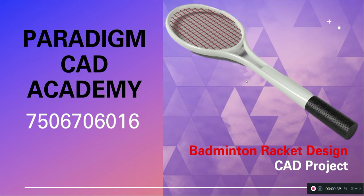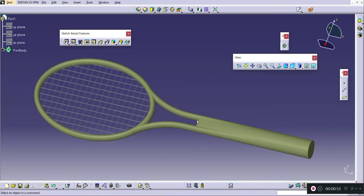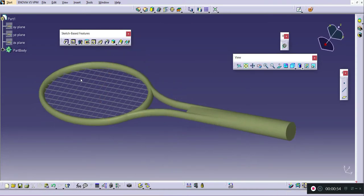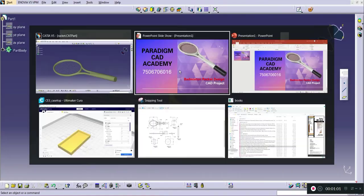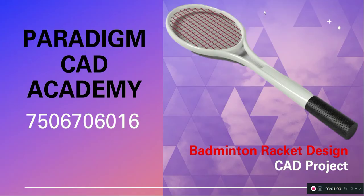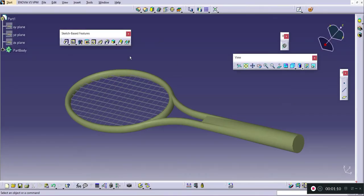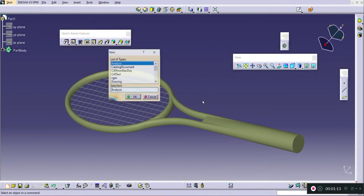Let's start designing the first head part of the badminton racket. After completing in CAD, the part will look like this, and after application of material, the final product will look like the image shown earlier. So let's start designing the part — I will go and create a new part.